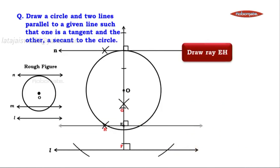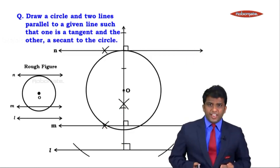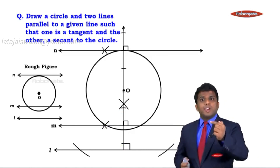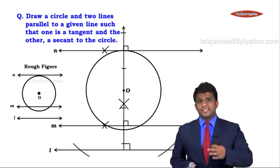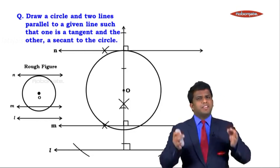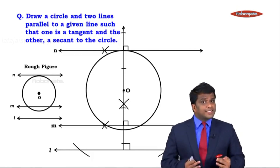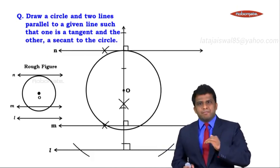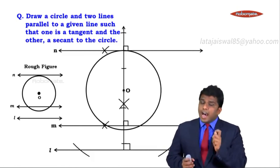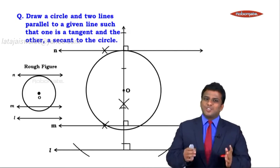We have now drawn line L (given), line M, and line N. Line N is definitely a tangent to the circle because it is perpendicular to the radius at its outer endpoint. Line M is definitely a secant because it intersects the circle at two distinct points. All three lines L, M, and N are perpendicular to the same line OZ, hence they are parallel to each other — which is exactly what we needed to construct.